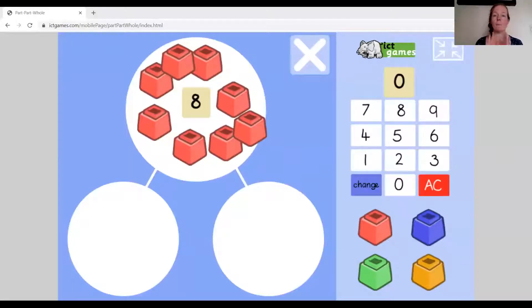Okay, so here we are. I've got my eight in my whole and I'm going to move them to the parts to see how we can make eight. And remember how we're trying to think about doing it in an order so we can make sure that we get all the different ways. Okay, so what do you think I should start with for my first part?